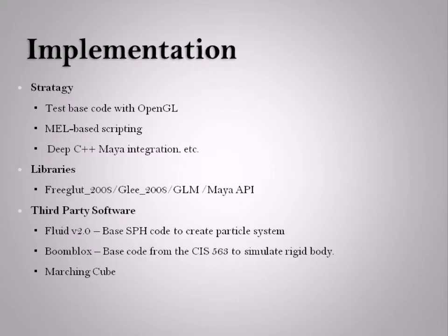In the implementation process, we begin with an OpenGL application which tests our base code, and then we integrate with Maya using MEL scripting. Libraries included are used for OpenGL rendering, OpenGL transformation, and the Maya API. Third-party software we are using includes Fluid V2.0 for the particle system, BoomBlock's code for rigid body, and a Marching Cube algorithm.